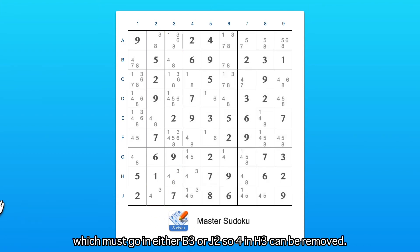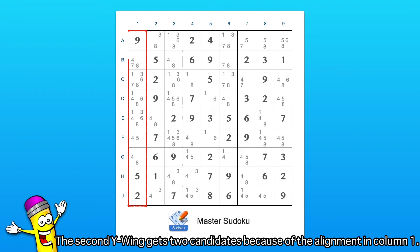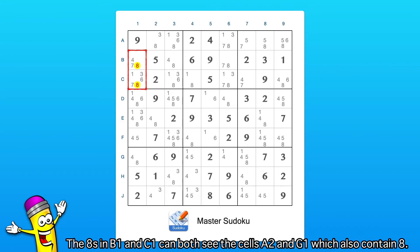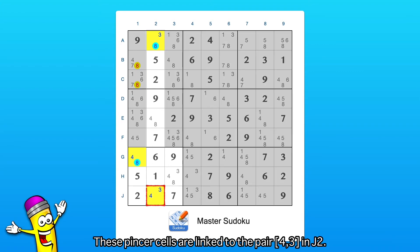The second Y-wing gets two candidates because of the alignment in column 1. The 8's in B1 and C1 can both see the cells E2 and G1, which also contain 8. These pincer cells are linked to the pair 4, 3 in J2.